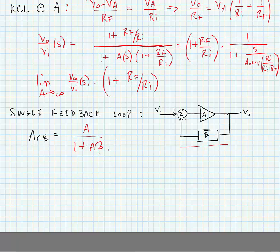Now what we're saying, if we say the limit of AFB as A tends to infinity, this ends up equaling 1 over beta.